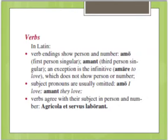Verbs in Latin always show person and number, and often a pronoun is omitted because it's built into the verb. For example, 'amo' can just mean 'I love' by itself, and 'amant' by itself means 'they love.' So in Latin, there's no need for an extra pronoun. Also in Latin, many of the helping verbs are included in the main verb, so it's not necessary to write that extra one.